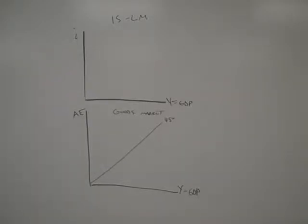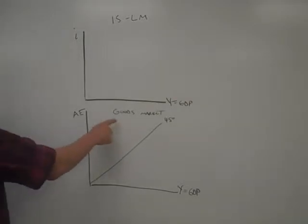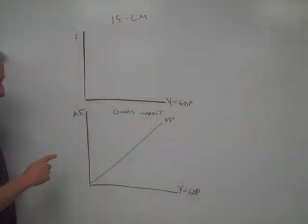In this module, we're going to derive the IS curve. So let's start on the bottom here. We have the goods market, what in macro we call the AE model.